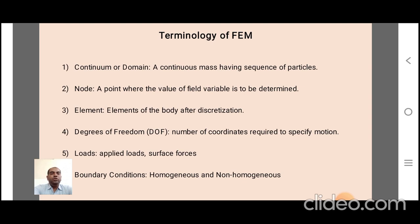The sixth terminology is boundary conditions — these are the conditions up to which the continuum has been defined. Boundary conditions may be homogeneous or non-homogeneous. Homogeneous boundary conditions consist of a beam fixed at both ends, and non-homogeneous boundary conditions consist of a beam fixed at one end and free at the other end.